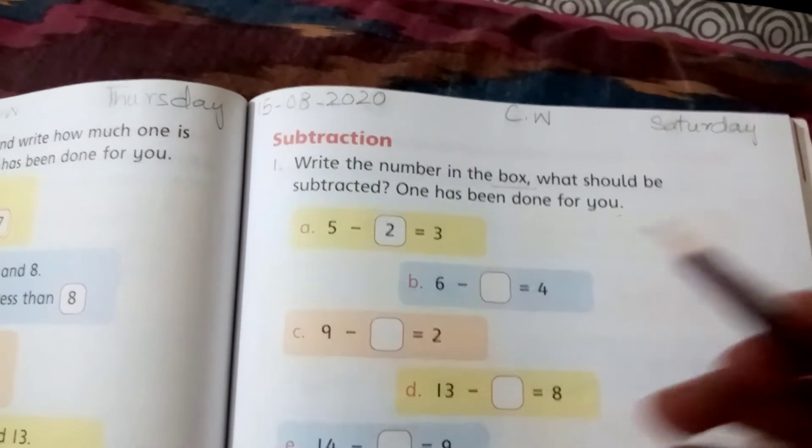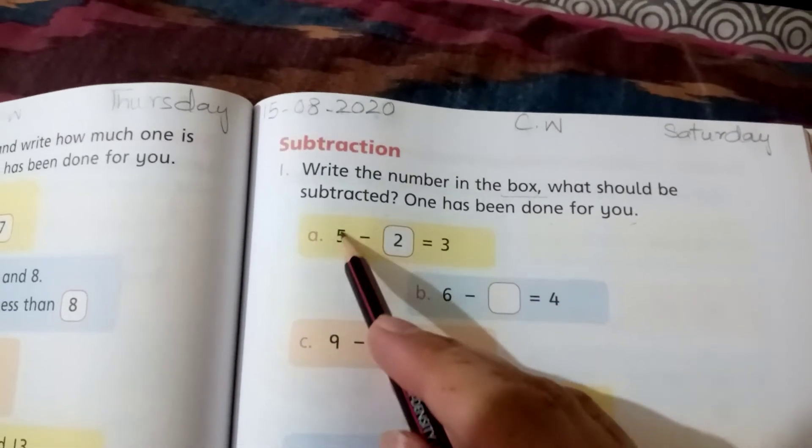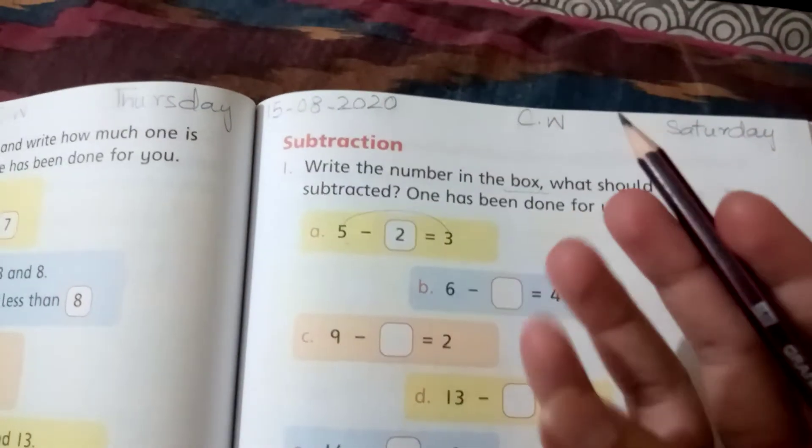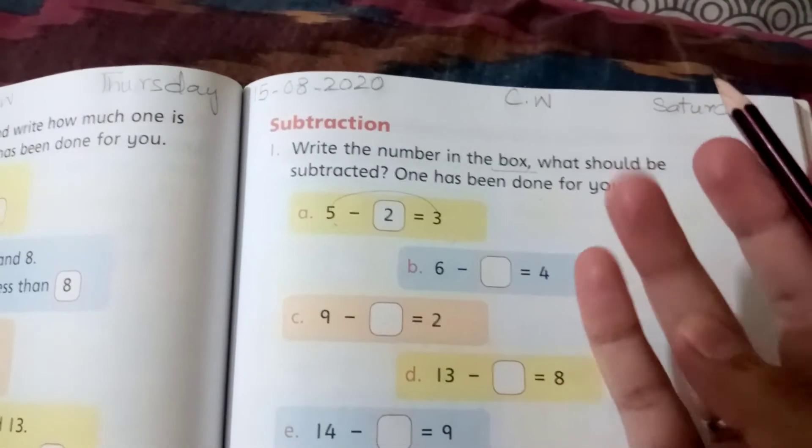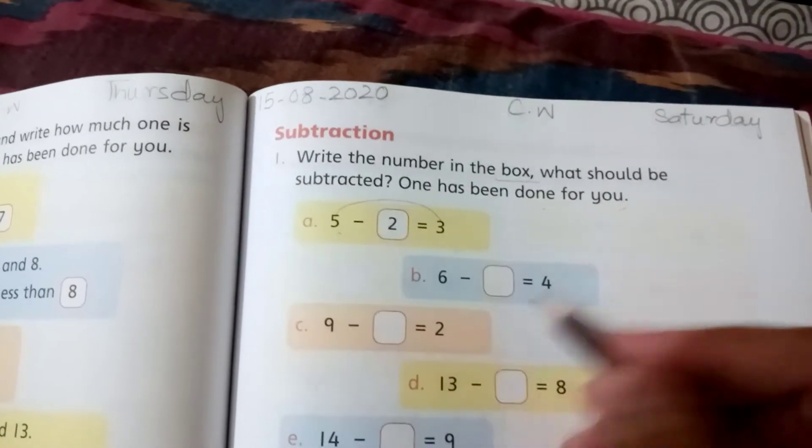For example, look at this. This is the missing number: 5 minus dash equals 3. So what should we do? If you do 5 minus 2, the answer will be 3. Count: 1, 2, 3, 4, 5. Minus 2, then what is left? 2. So you will write 2 here.